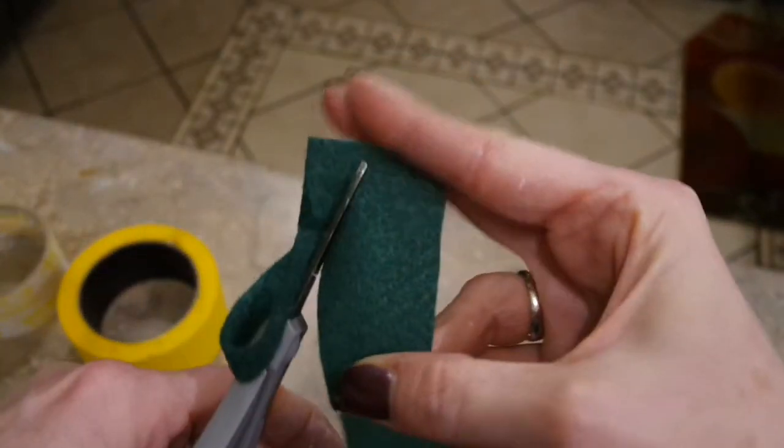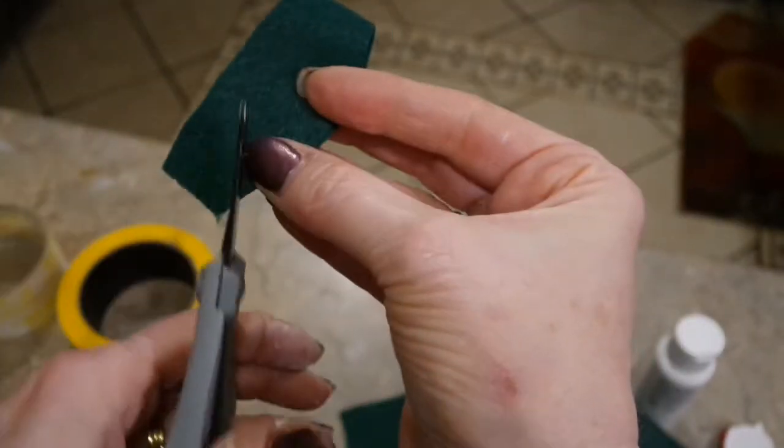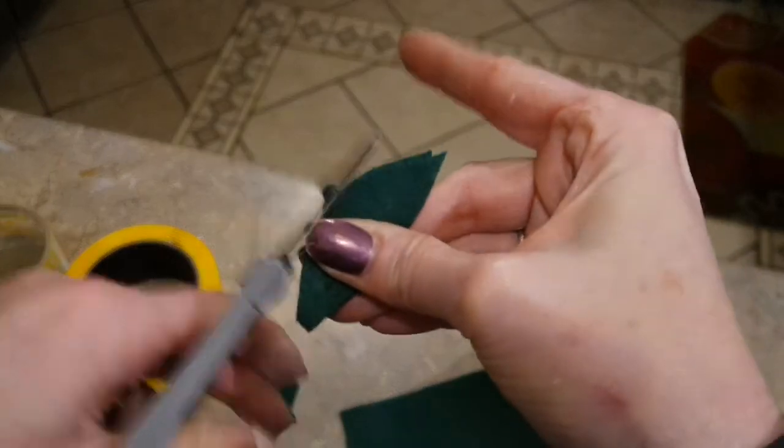For my leaves, I just took some of my green felt, freehand some little leaves like this. I fold it over and I'm cutting two at a time - nothing that looks kind of like a rose leaf. I'm gonna cut about three or four of those.